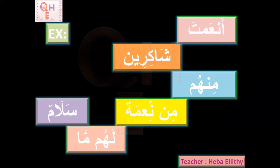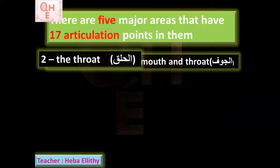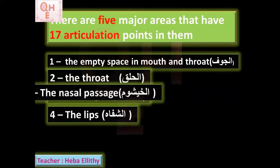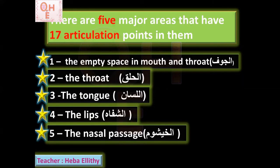So we said in the beginning of the class we have five major areas that have 17 articulation points: number one al-jawf, number two al-halq, number three al-lisan, number four al-shifa', and number five al-khayshum. We finished all five. So we have finished all the Makharij al-Huroof al-Lughal-Arabiyya — all the articulation points of the Arabic letters during our classes. Alhamdulillahi rabbil alameen.